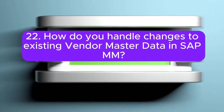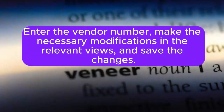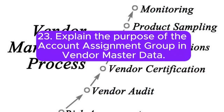22. How do you handle changes to existing Vendor Master Data in SAP MM? Answer: To change existing Vendor Master Data, use the transaction code MK02 (Change Vendor). Enter the vendor number, make the necessary modifications in the relevant views, and save the changes.